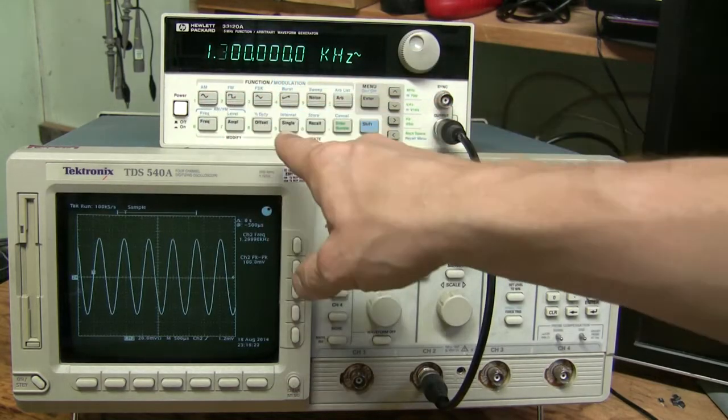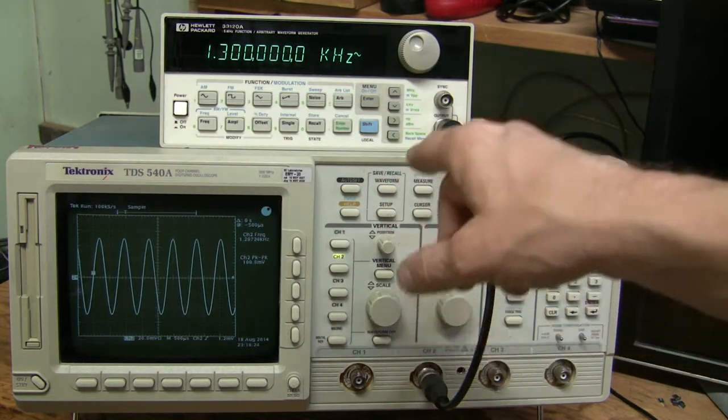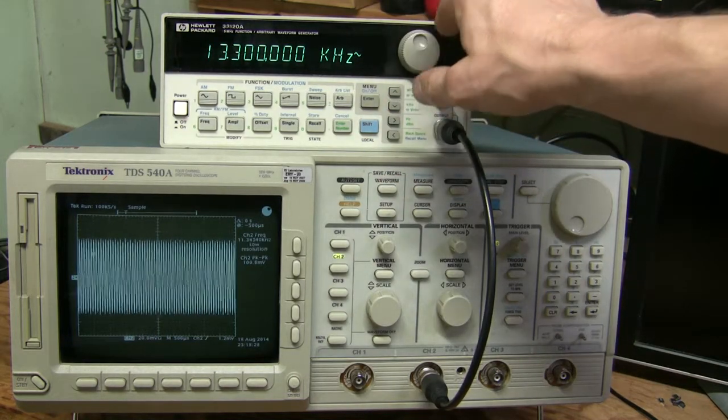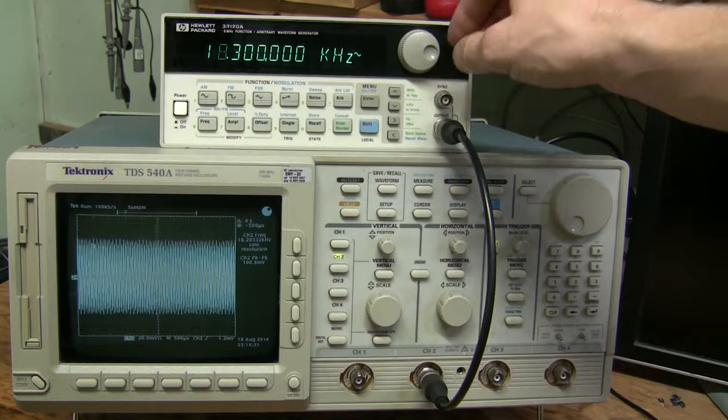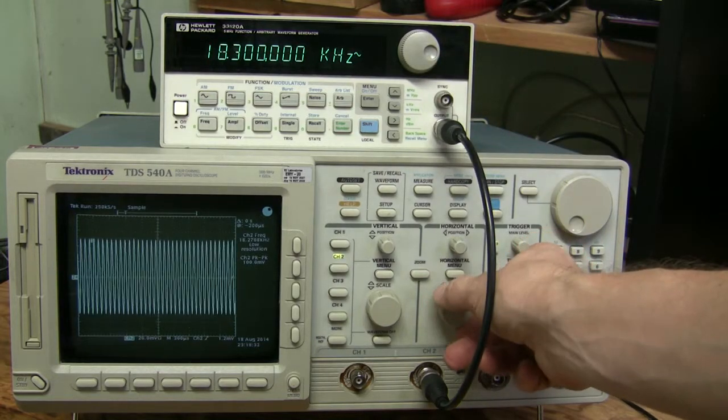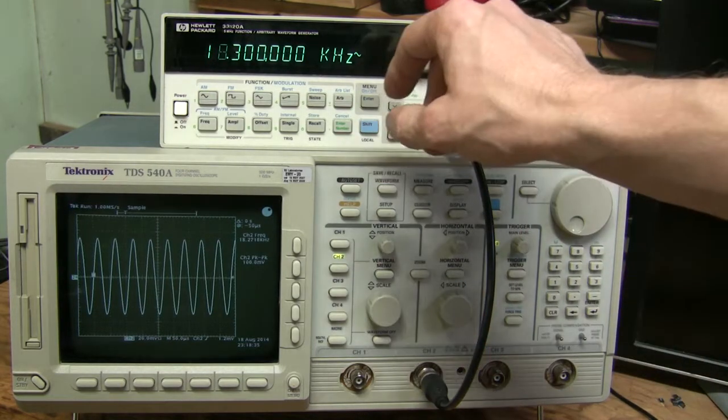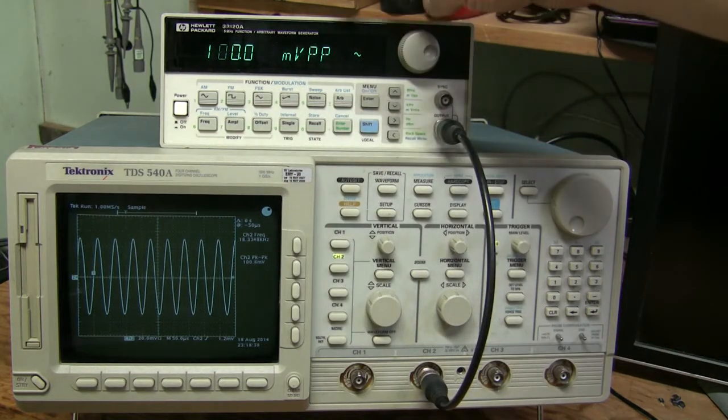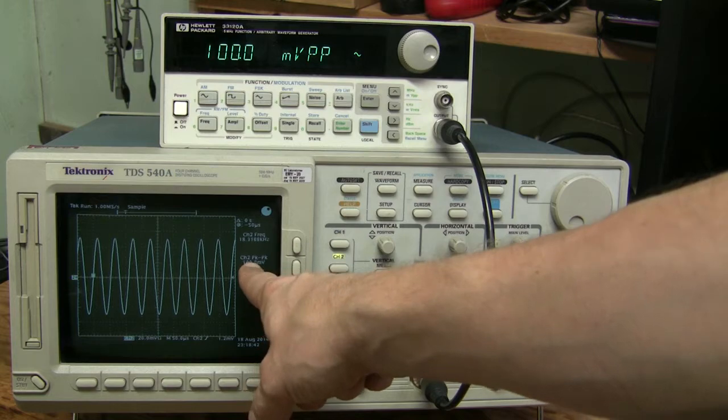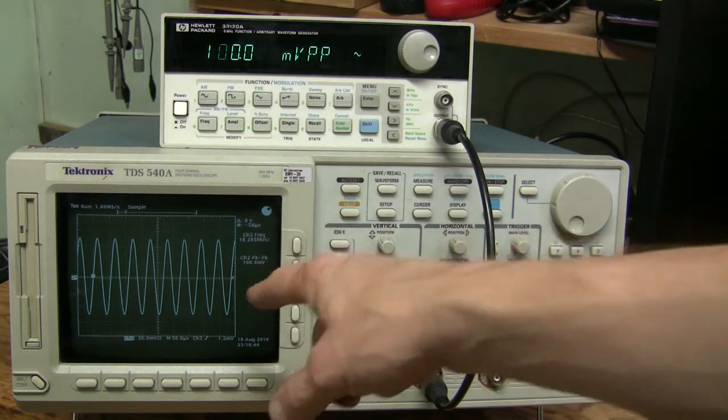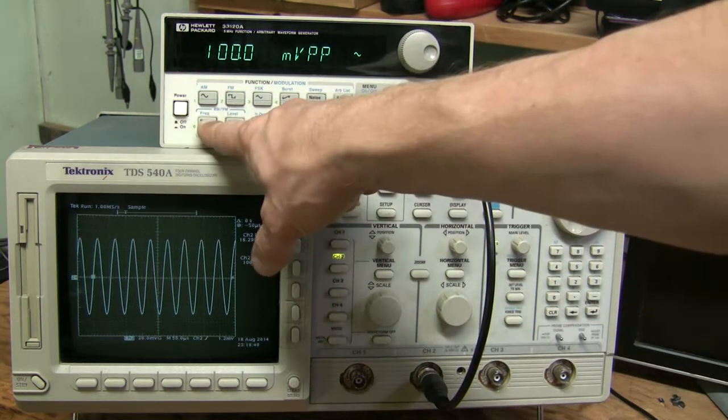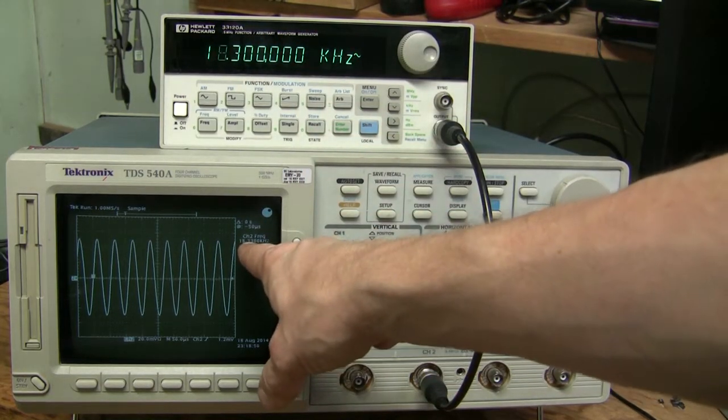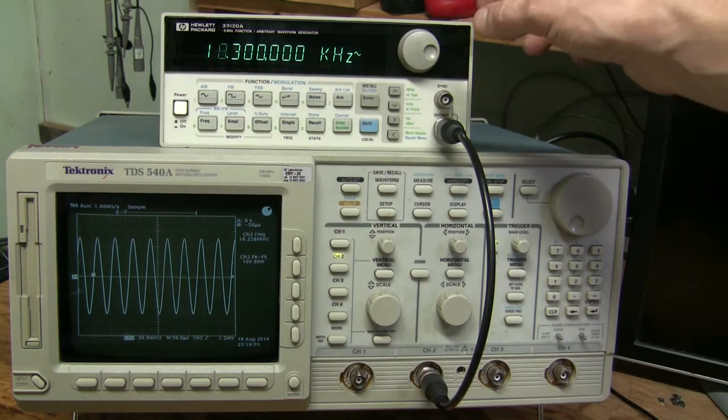Okay, let's go back to sine wave. Let's try to adjust frequency and that's fine. Let's try amplitude - 100 millivolts peak to peak and this measurement and the scope confirms this. And frequency is 18 kilohertz and the scope measures the same thing, so everything looks fine.